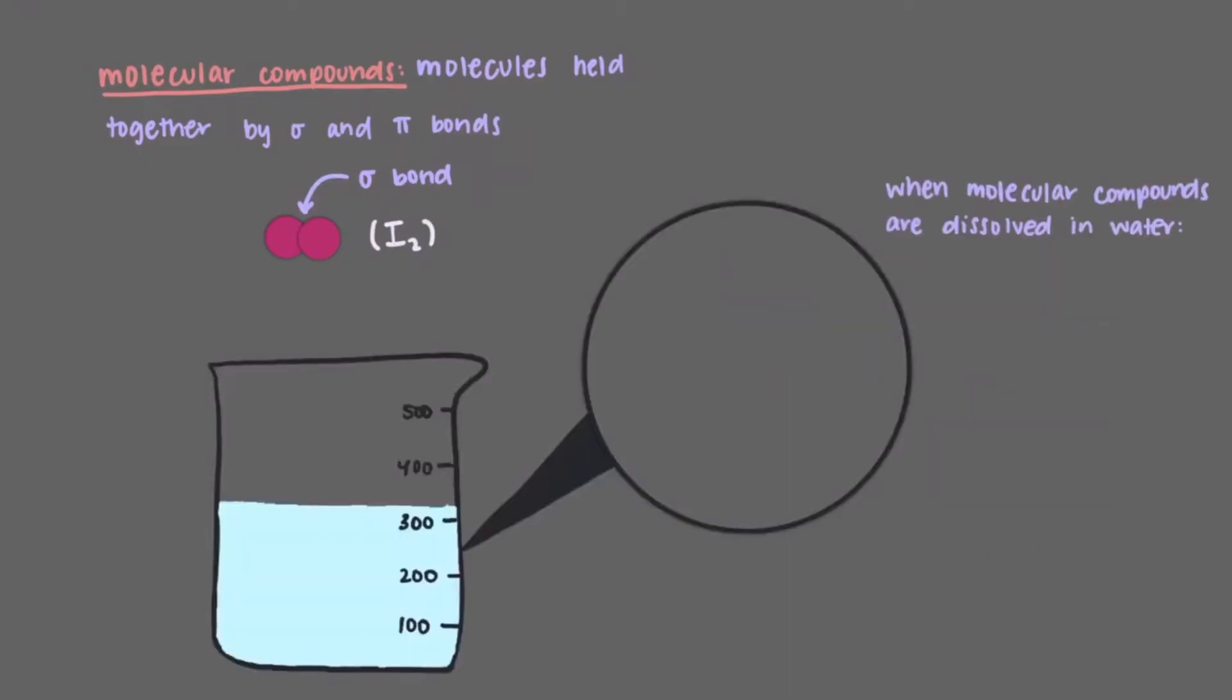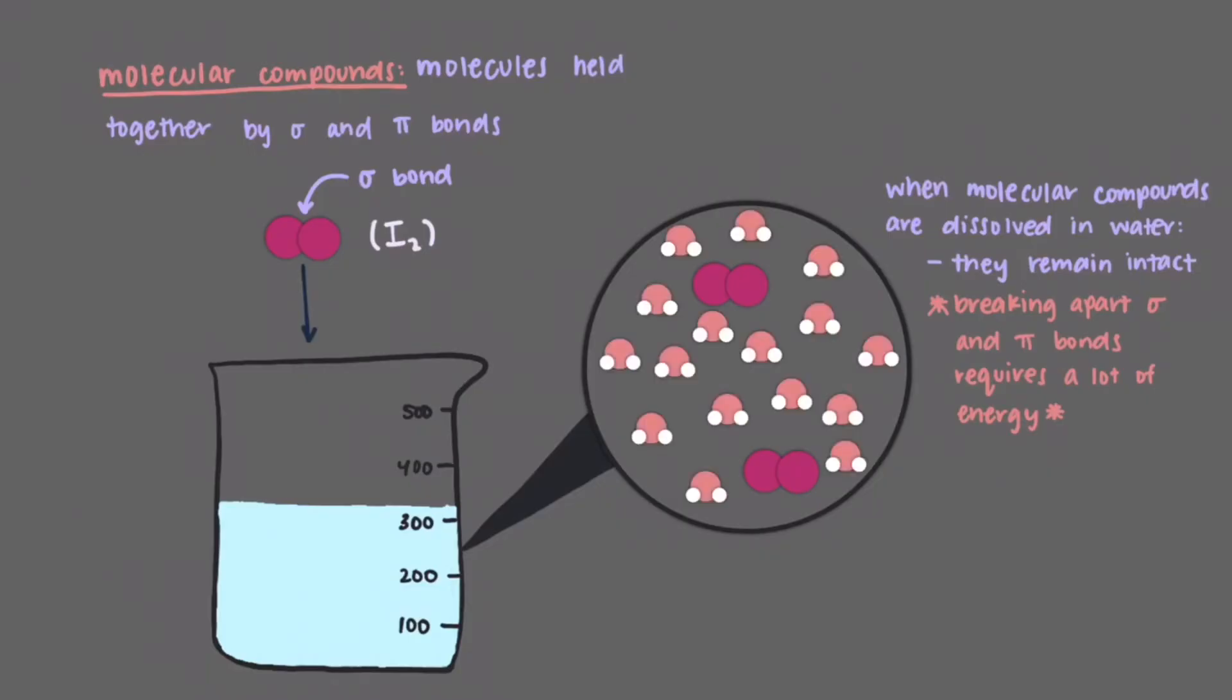When iodine or any molecular compound is dissolved in water, it will remain intact and will be evenly distributed throughout the solution. Breaking apart the sigma and pi bonds that hold together atoms in molecular compounds requires a lot of energy and so these compounds dissolve intact. Water molecules will be all around the iodine molecules, but they won't interact with them in the same way as they would with ionic compounds.